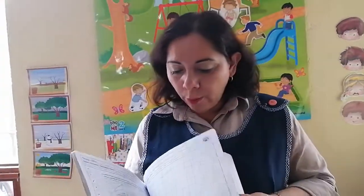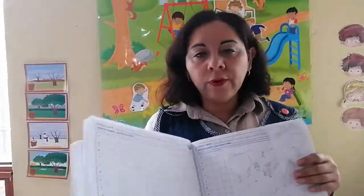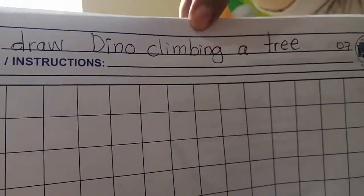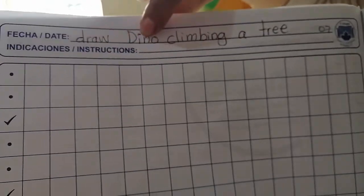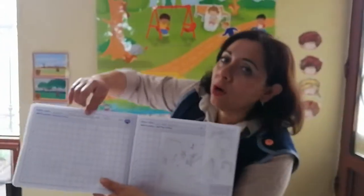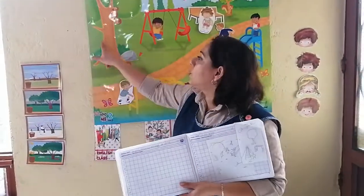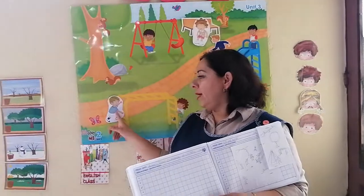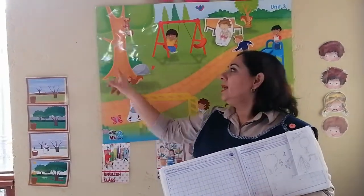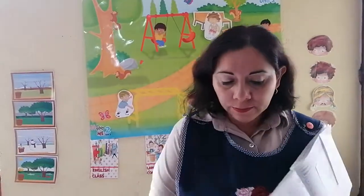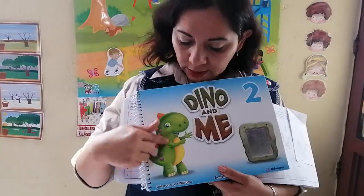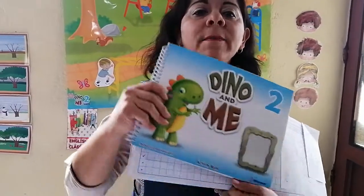In your language notebook, I would like you to open and look for this instruction: Draw Dino climbing a tree. Please bring your pencil or your colors because we are going to draw Dino climbing a tree. Climbing. Do you remember the bird? Draw Dino climbing a tree. Dino is our puppet. Dino climbing a tree.